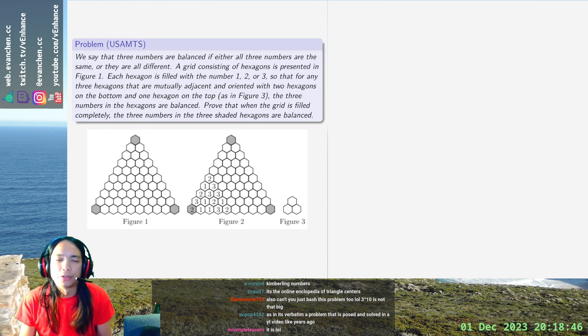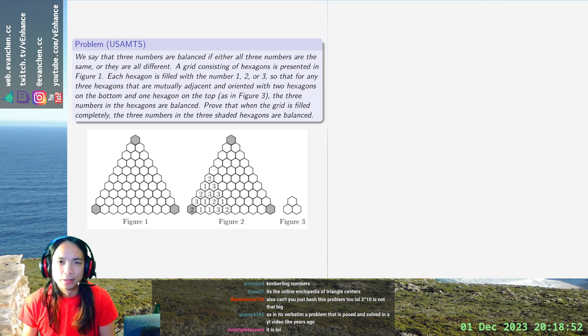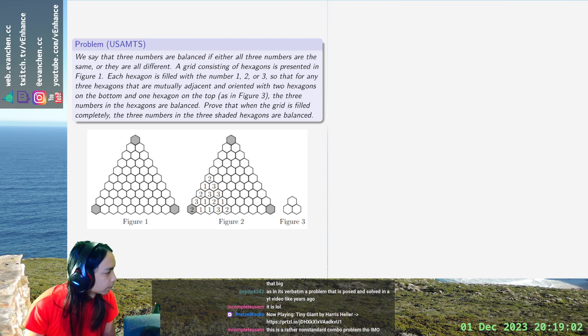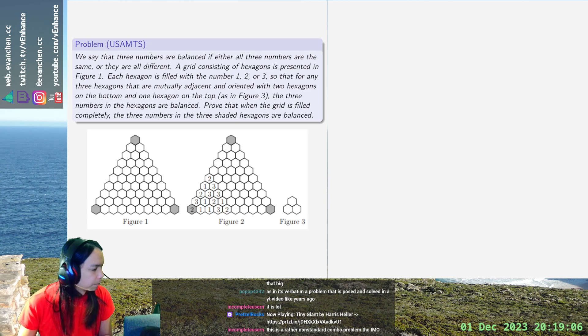And you fill them in in such a way such that for every upwards-pointing triangle, the three numbers are either all the same or all different. And you want to show that if you do this, then the gray cell is all different.